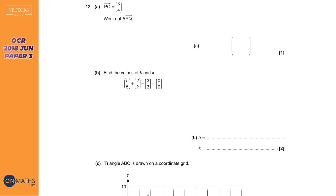Let's get started with vectors. The really important thing to know is all they show is a direction — normally diagonal. The way they show it is with two numbers in column brackets: the top number tells you how far right to go, and the bottom number tells you how far up to go. If you want to go left, make the top number negative; if you want to go down, make the bottom number negative.